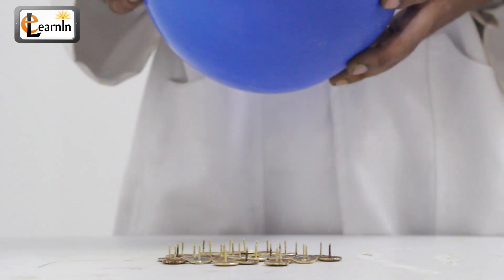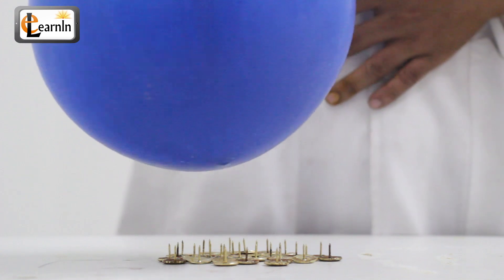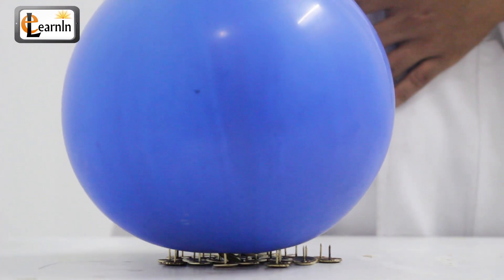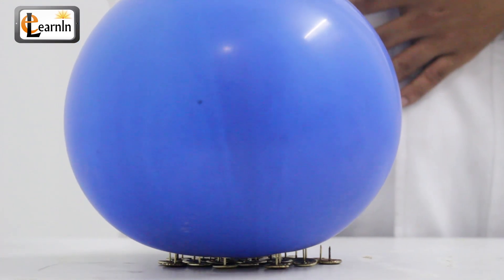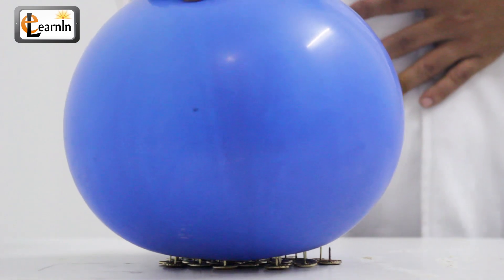Now, place some pins on the table. Take a balloon and put it on the pins. Apply some force evenly. You should notice that the balloon doesn't burst.